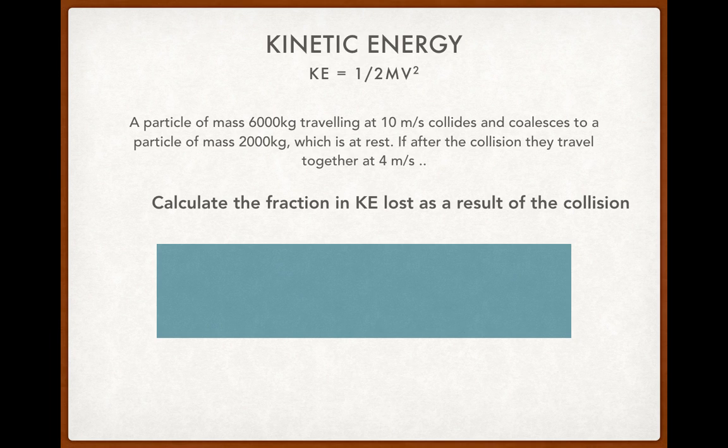Right. Particle of mass 6000 kgs traveling at 10 meters per second. It collides and coalesces. Coalesces means it just connects and sticks onto it. To a particle of mass 2000 kgs which is at rest. If after the collision they travel together at 4 meters per second, calculate the fraction of kinetic energy lost as a result of the collision.